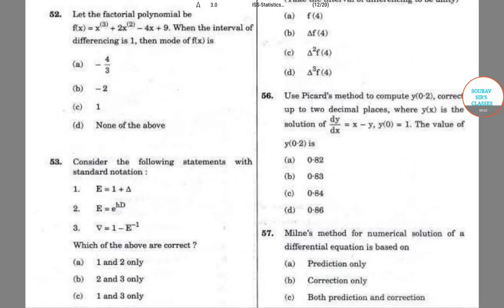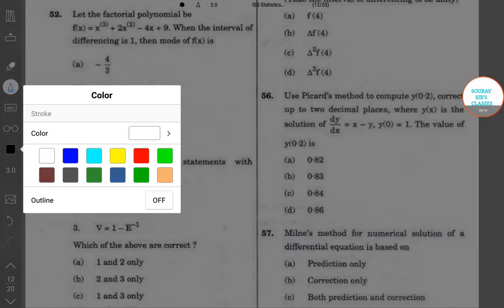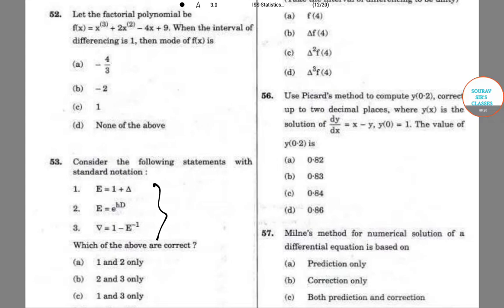Hello students, welcome to Source Classes. In this video I will be solving selective questions from ISS Statistics 2017 Paper 1, and we'll start with question number 53. In question 53 we have three standard notations and we have to check which one is correct.